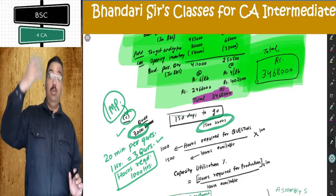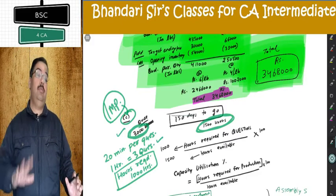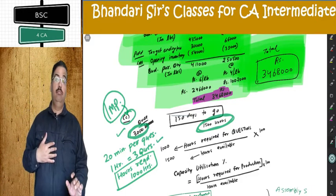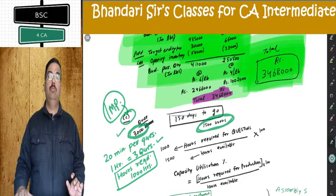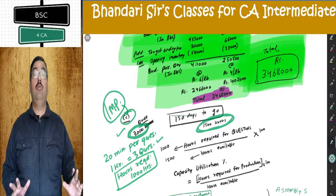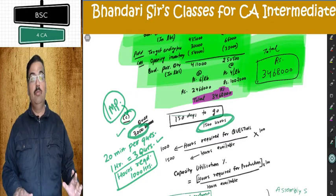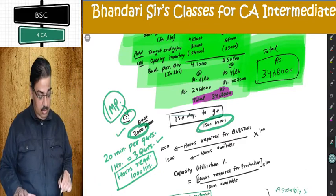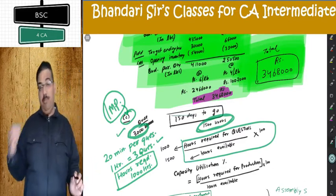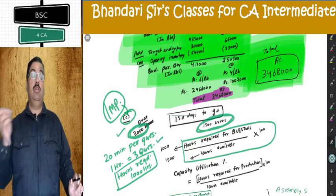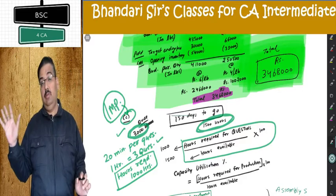If you had planned 6,000 questions, you would require 2,000 hours — you would be over-utilized. You would need to do overtime, sleep less, eat less, enjoy less, study more to complete those 6,000 questions, because they require 2,000 hours but you have only 1,500 hours of normal availability. Same thing applies in factories, companies, corporates.